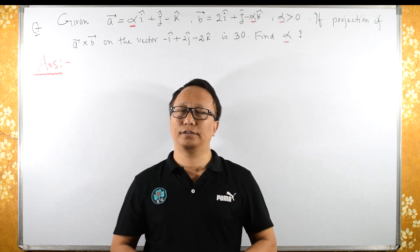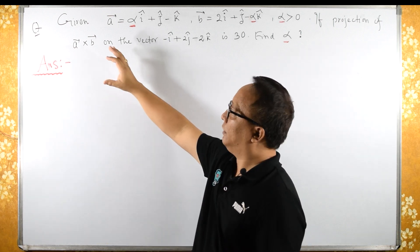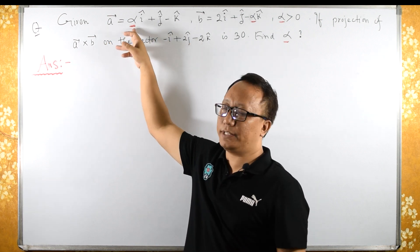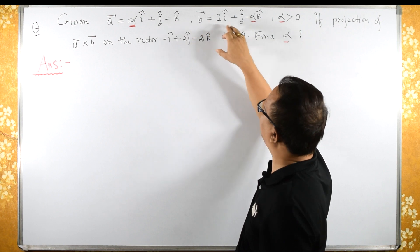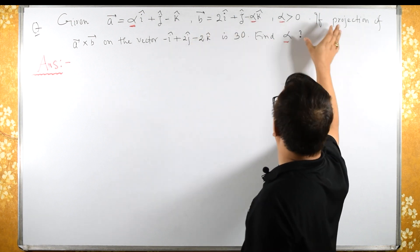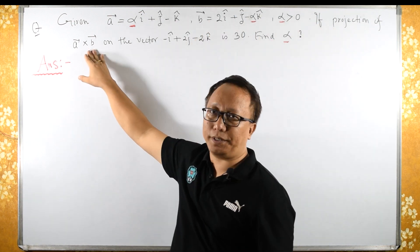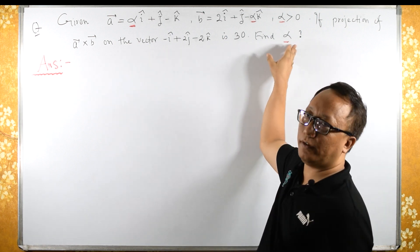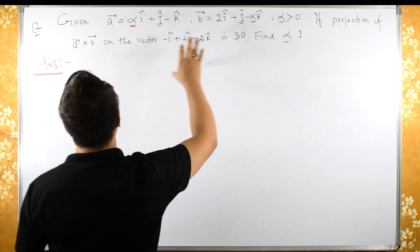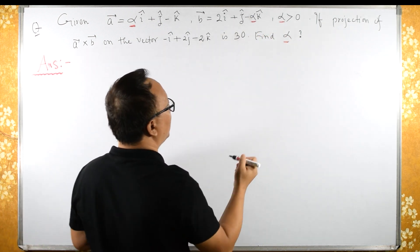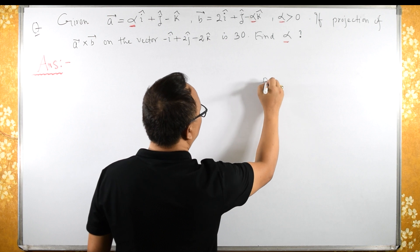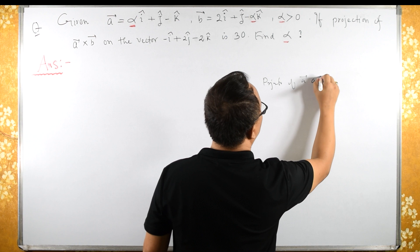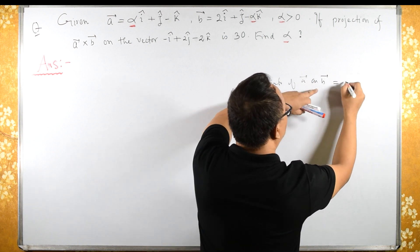Welcome to this section of the course. Today I will be solving this question. A vector is given here, alpha is there, alpha is greater than 0, b vector is given, and the projection of a cross b on a given vector is provided. We need to find the value of alpha.